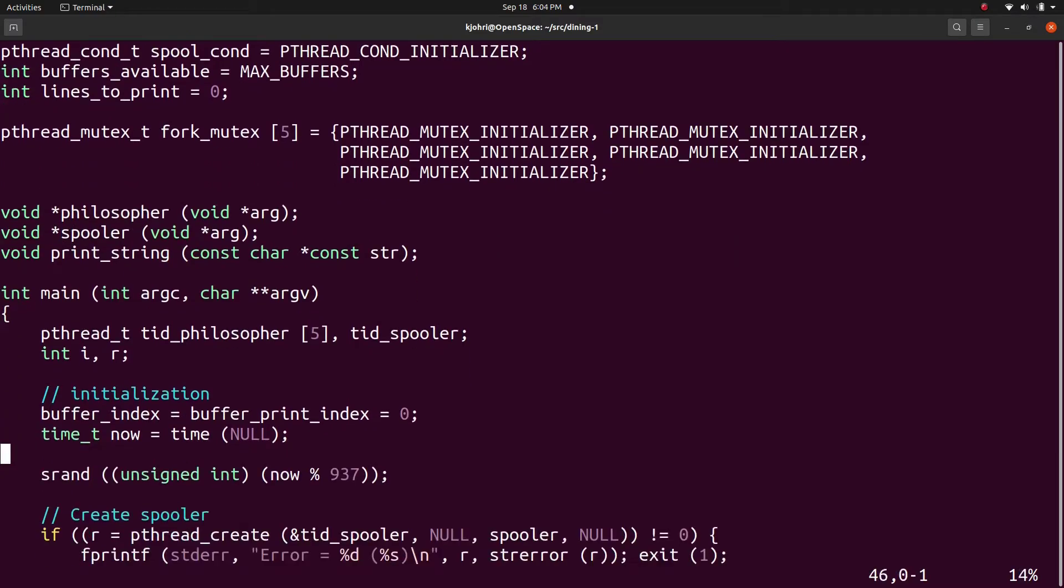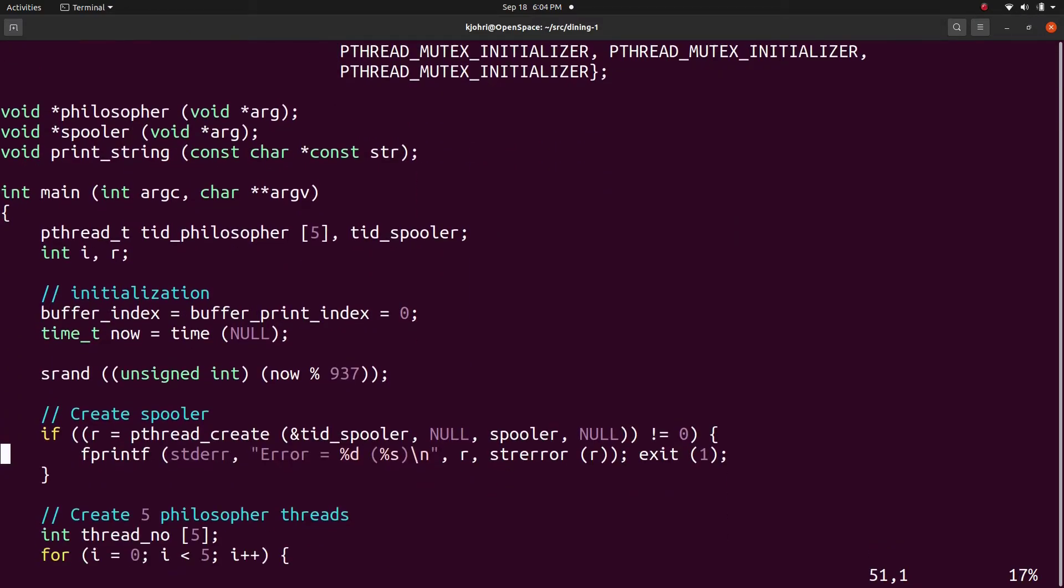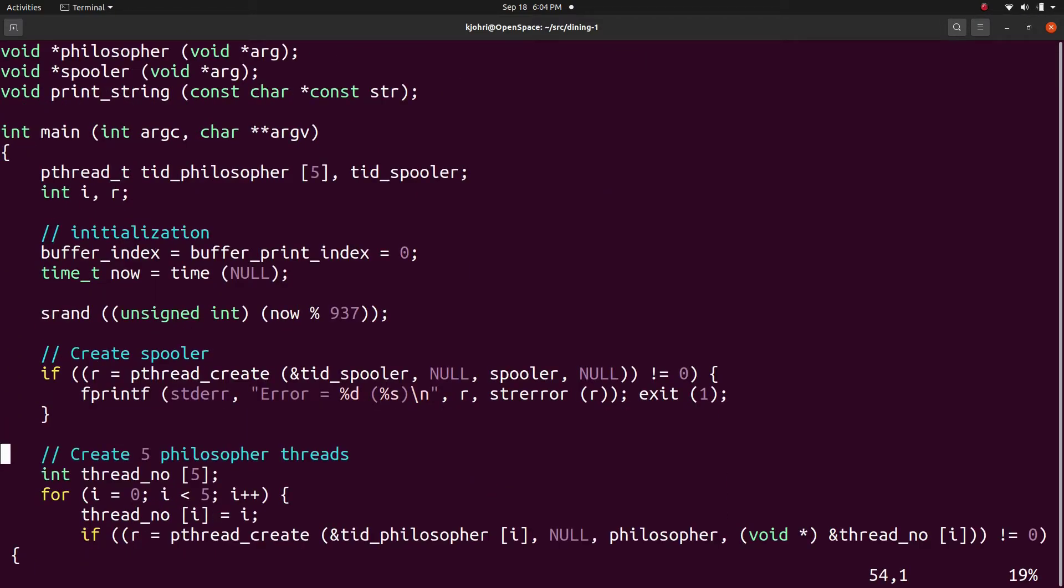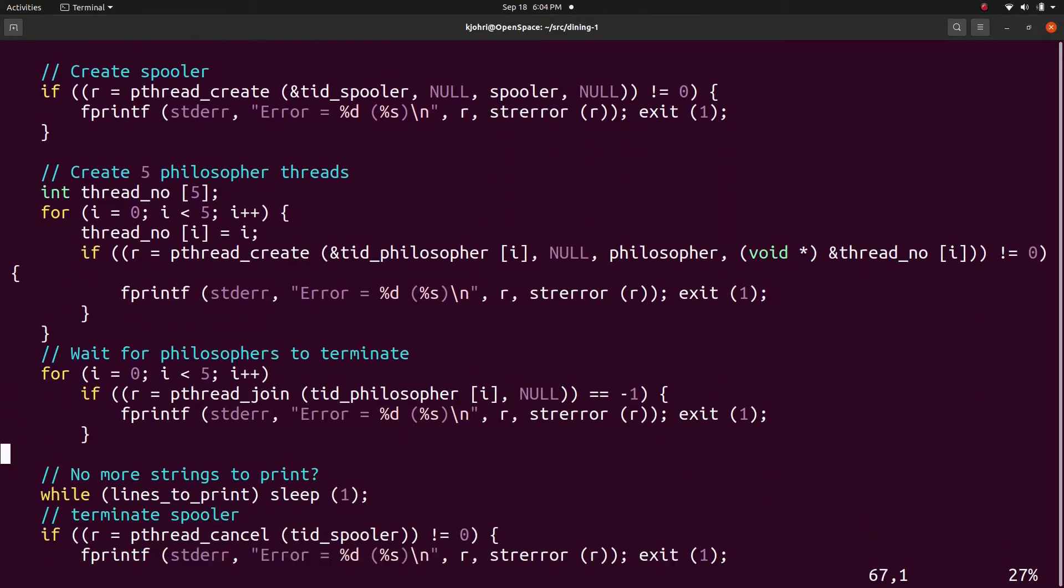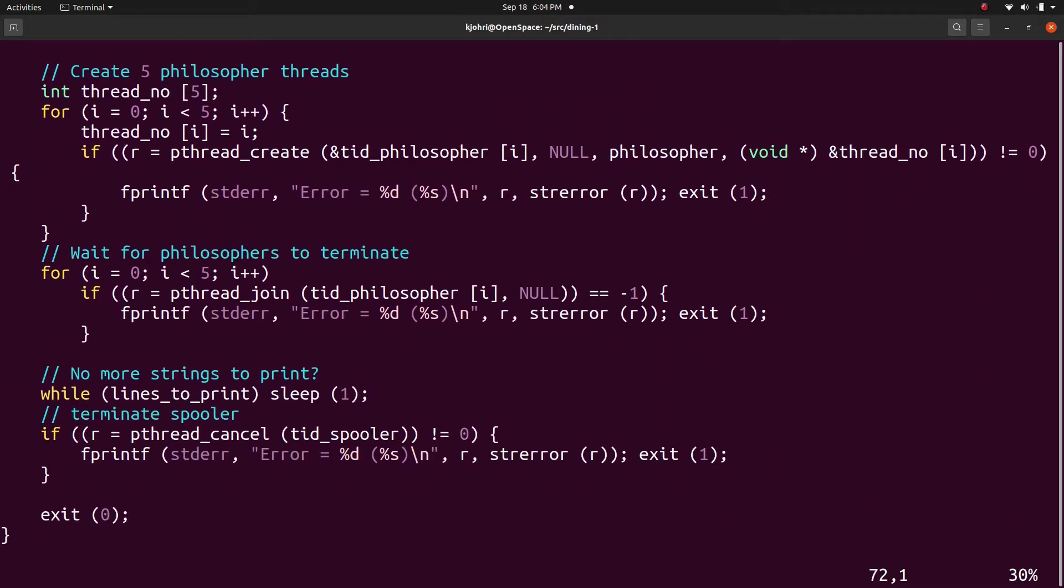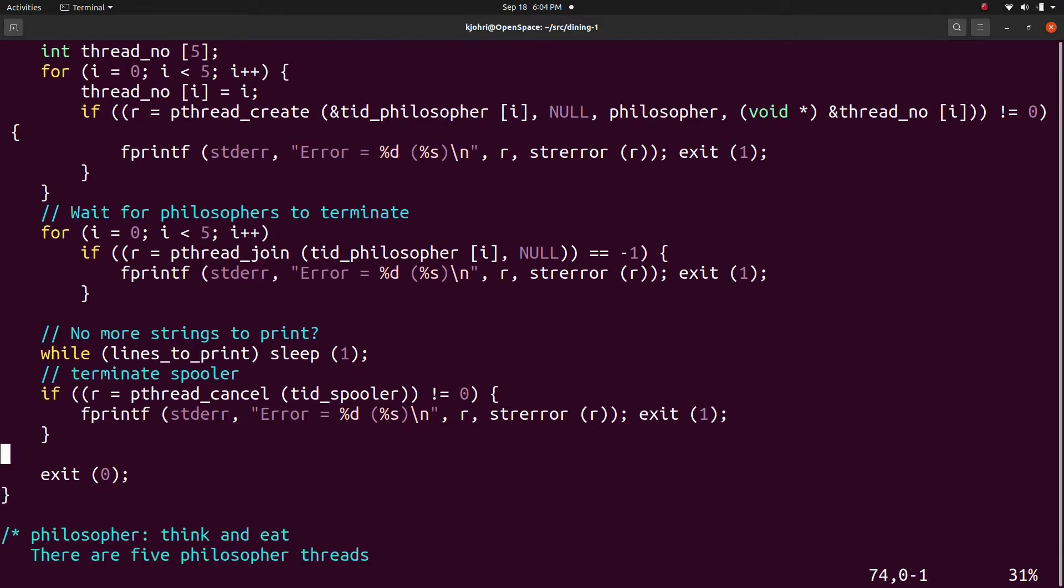We initialize the indexes for the spooler and we also initialize the random number generator. The philosophers eat and think for random durations, so the random number generator is handy there. We create the spooler thread and the five philosopher threads and we wait for them to complete. But the philosophers think and eat forever, so it is kind of infinite loop.